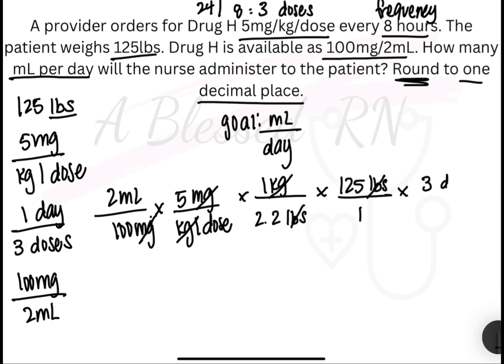The last thing that's left is dose. We know that there are 3 doses in 1 day, so 3 doses on the top and 1 day on the bottom — doses cross out. Everything has crossed out except for milliliter on the top and day on the bottom, which is your goal. So now we can finally do math: multiply across the top, multiply across the bottom, divide the top by the bottom.